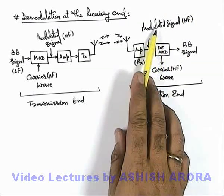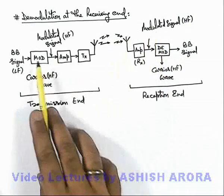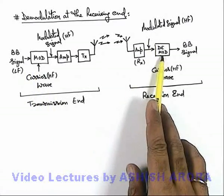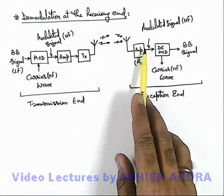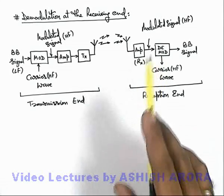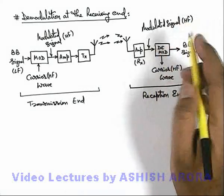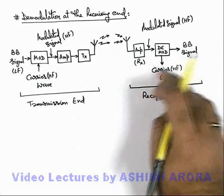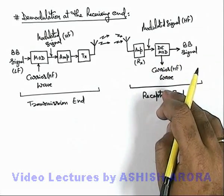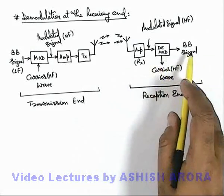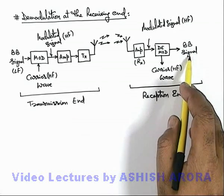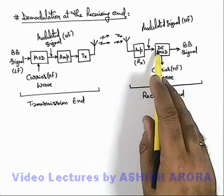And as the signal contains the information of baseband signal, there is a device we call demodulator. In which when the modulated signal is supplied, it extracts baseband signal from the modulated signal and removes the carrier wave which is high frequency. So this is the way how the baseband signal is extracted from the received modulated signal.